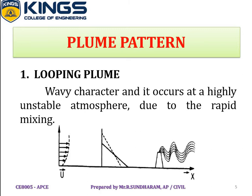The looping plume is defined as a plume with a wavy character. It occurs in a highly unstable atmosphere due to rapid mixing. The plume from the stack appears wavy in nature. In this pattern, the atmosphere is highly unstable because mixing is rapid, not slow, causing the looping plume to appear as a wavy character.